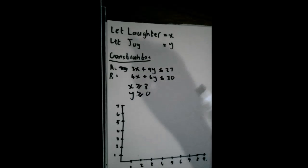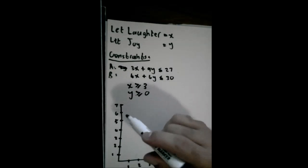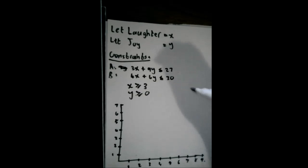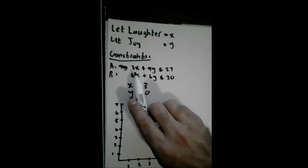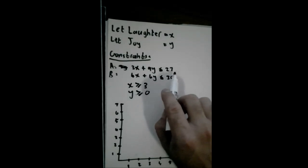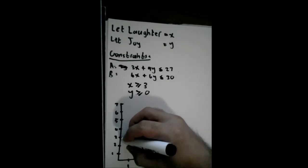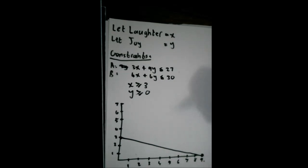To plot these, the easiest way to do that is just to find your x and y intercepts, plot the points and connect the lines. For fragrance A, the x intercept would be 3 times what gives you 27? 3 times 9, so the x intercept here is 9. And the y intercept, 9 times what gives you 27? 9 times 3. Now we just connect those lines with a nice straight line.